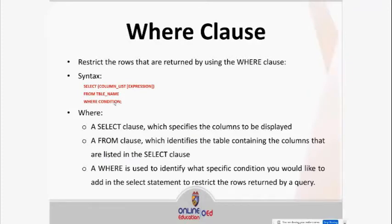The SELECT clause specifies the columns to be displayed. The FROM clause identifies the table containing the columns listed in the SELECT clause. The WHERE clause is used to identify what specific condition you would like to add in the SELECT statement to restrict the rows returned by a query.